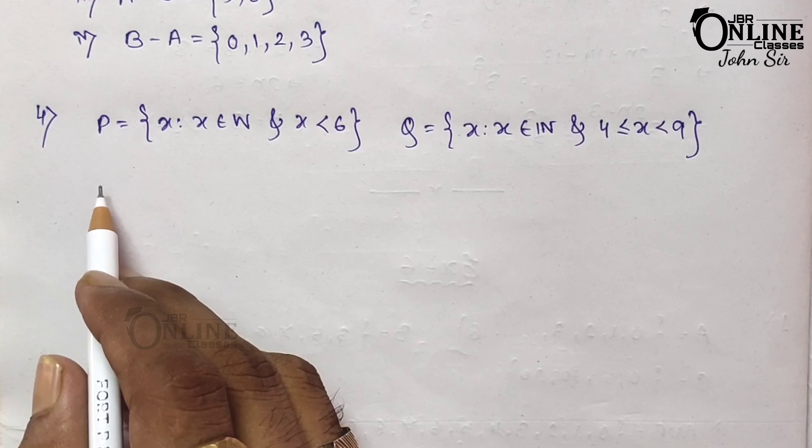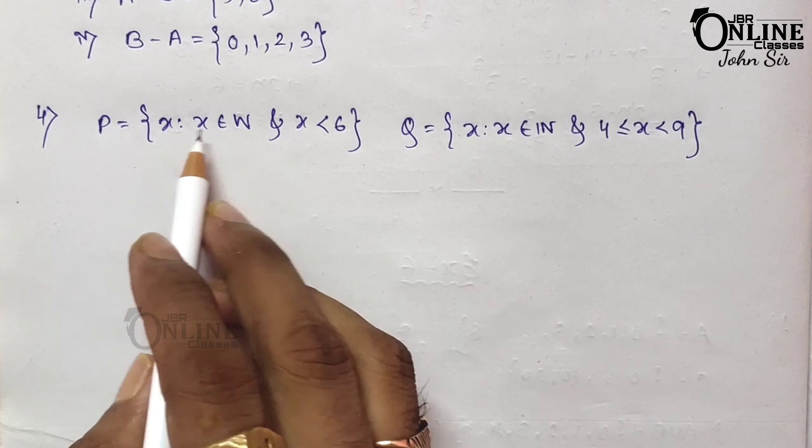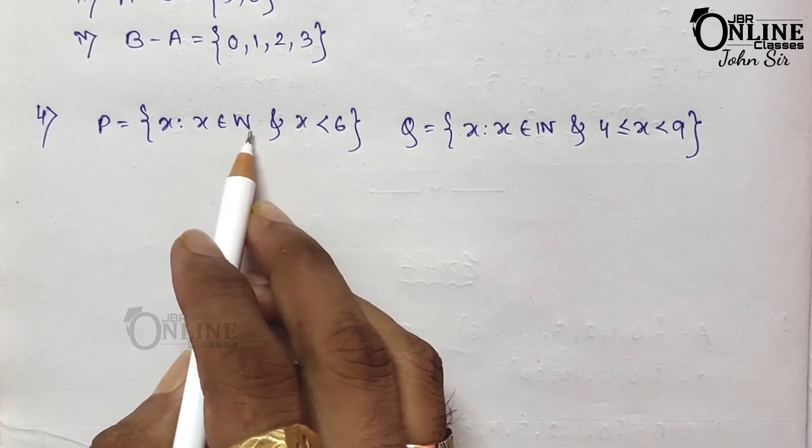Now sum number 4. If P equals {x such that x belongs to W and x < 6}, the elements of P are 0, 1, 2, 3, 4, and 5. And Q equals {x such that x belongs to N and 4 ≤ x < 9}, so the elements of Q are 4, 5, 6, 7, and 8.